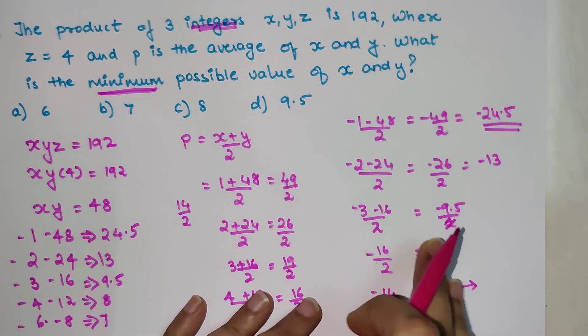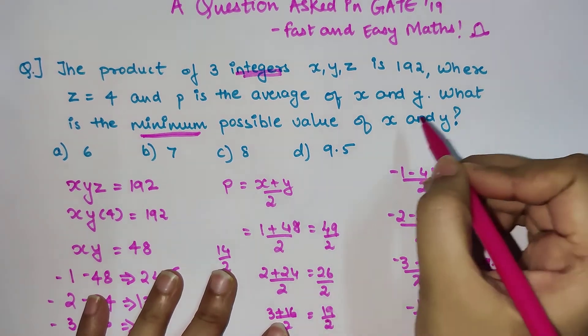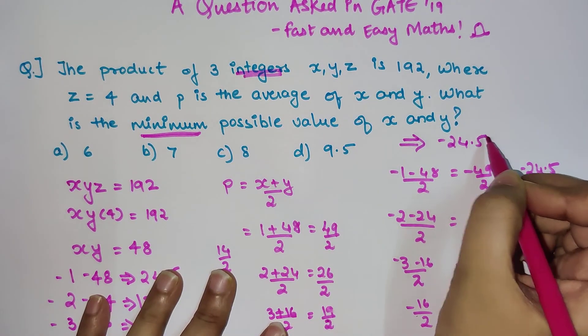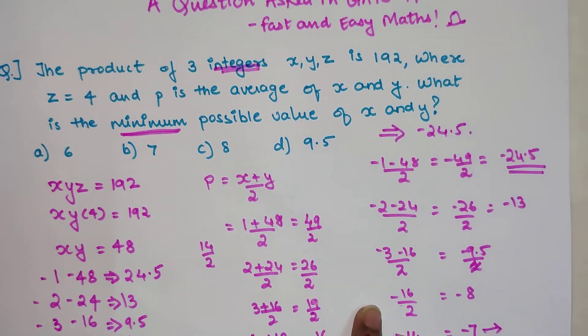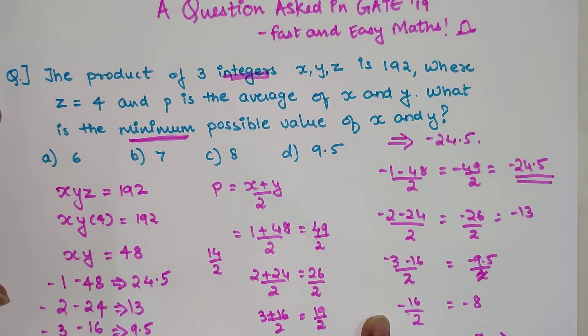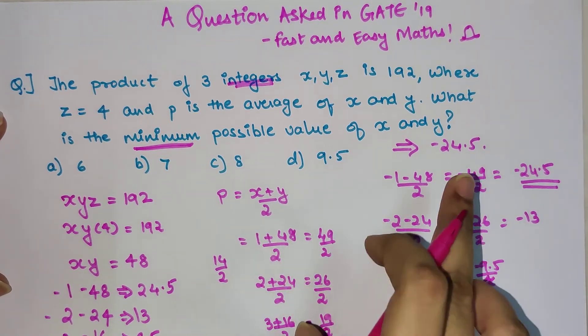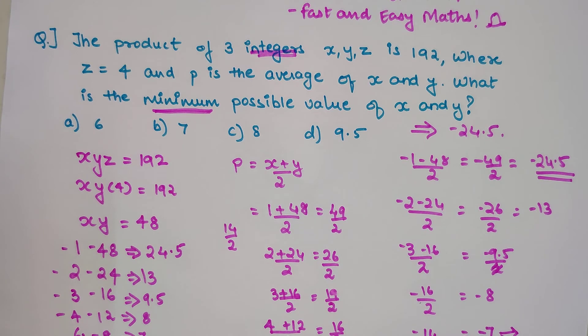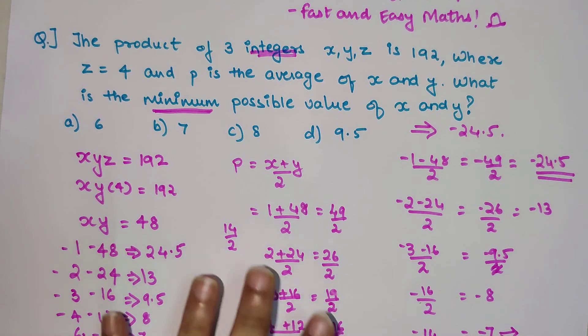So we can say that the answer for this one is minus 24.5. Students, the people who set the paper, since this particular answer was not available in the options and 'none of these' was also not available, they accepted their mistake and gave marks to all of them.